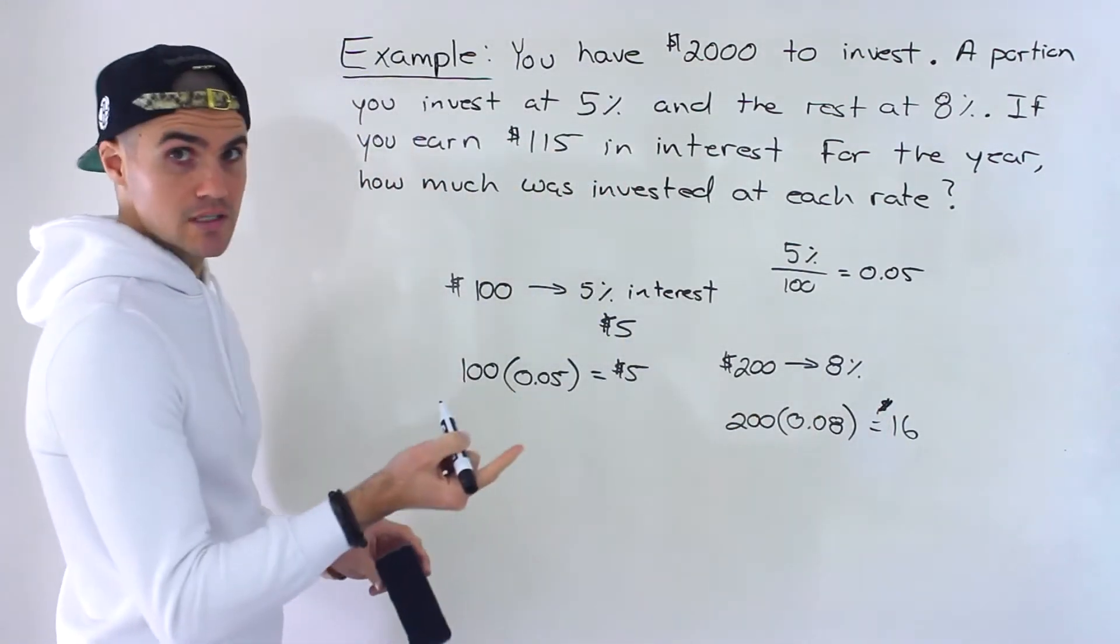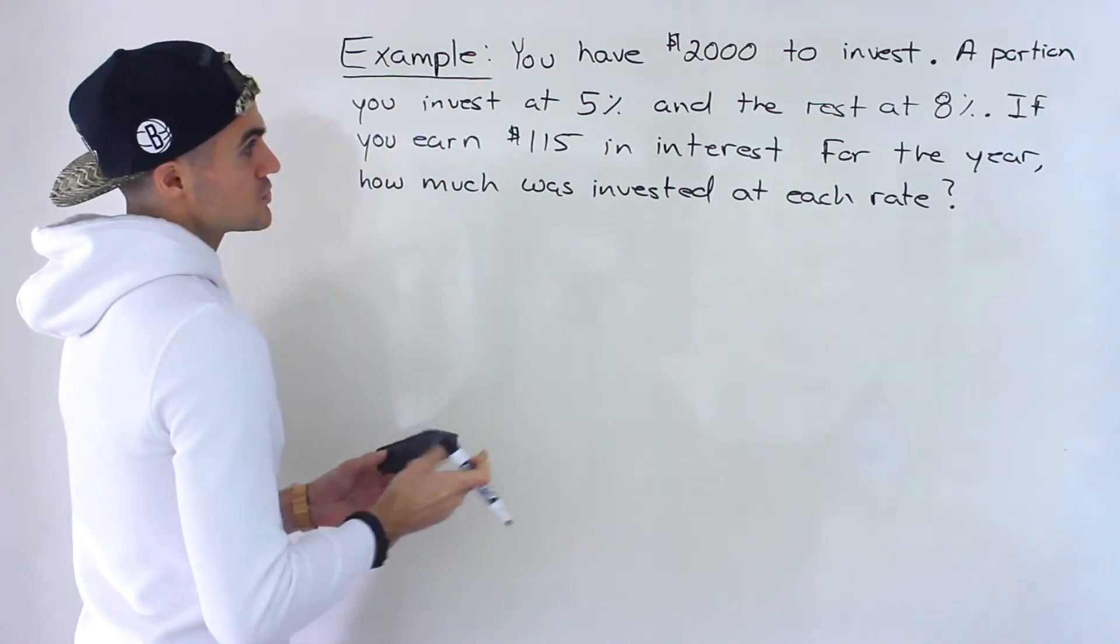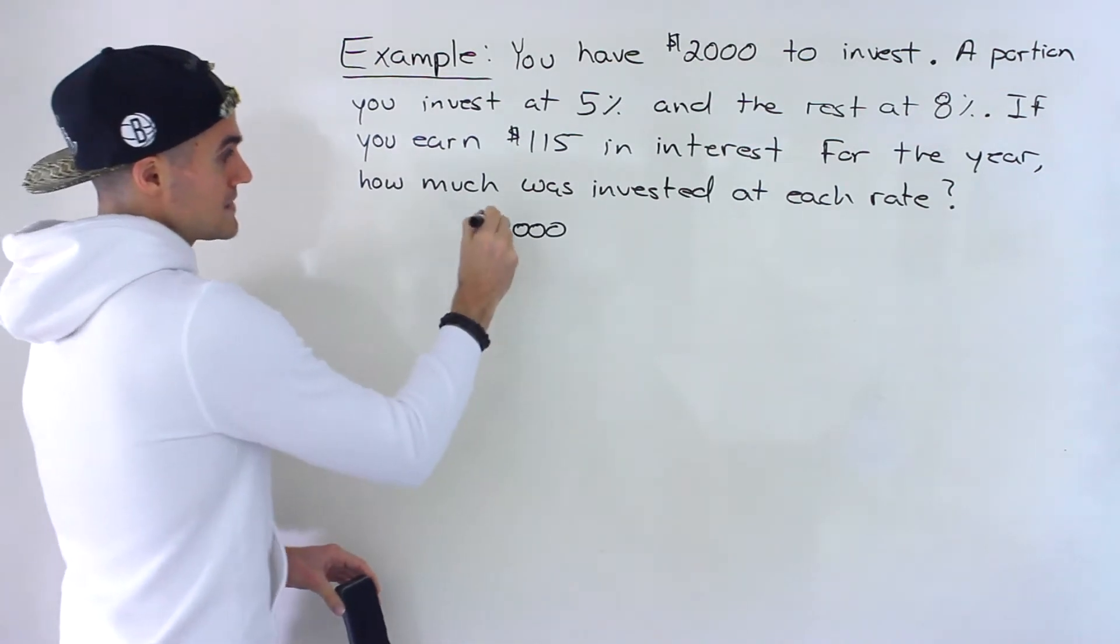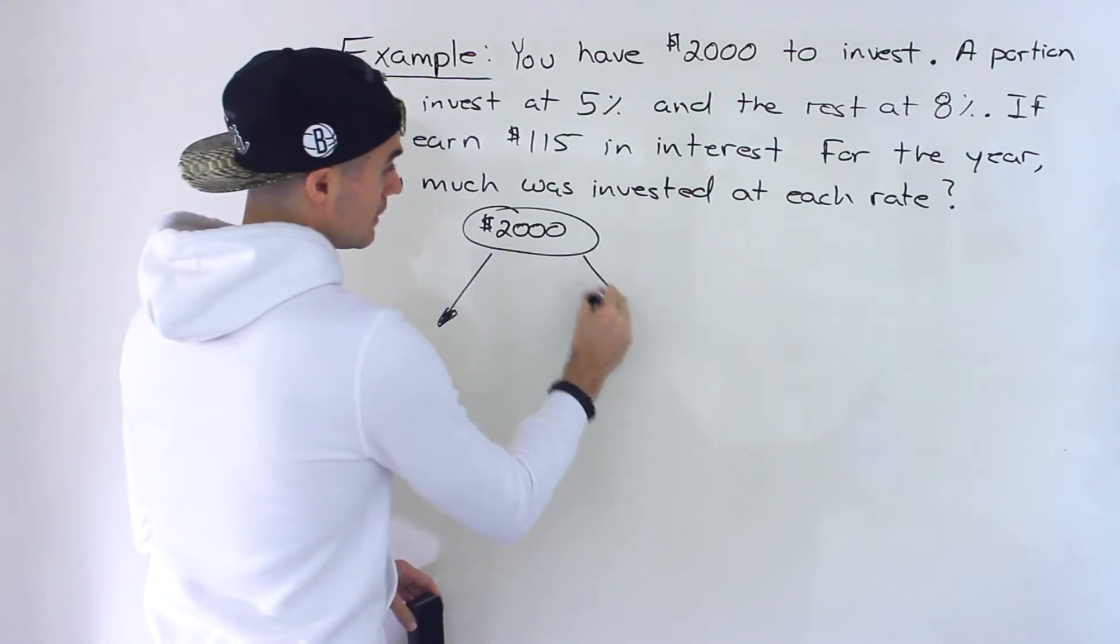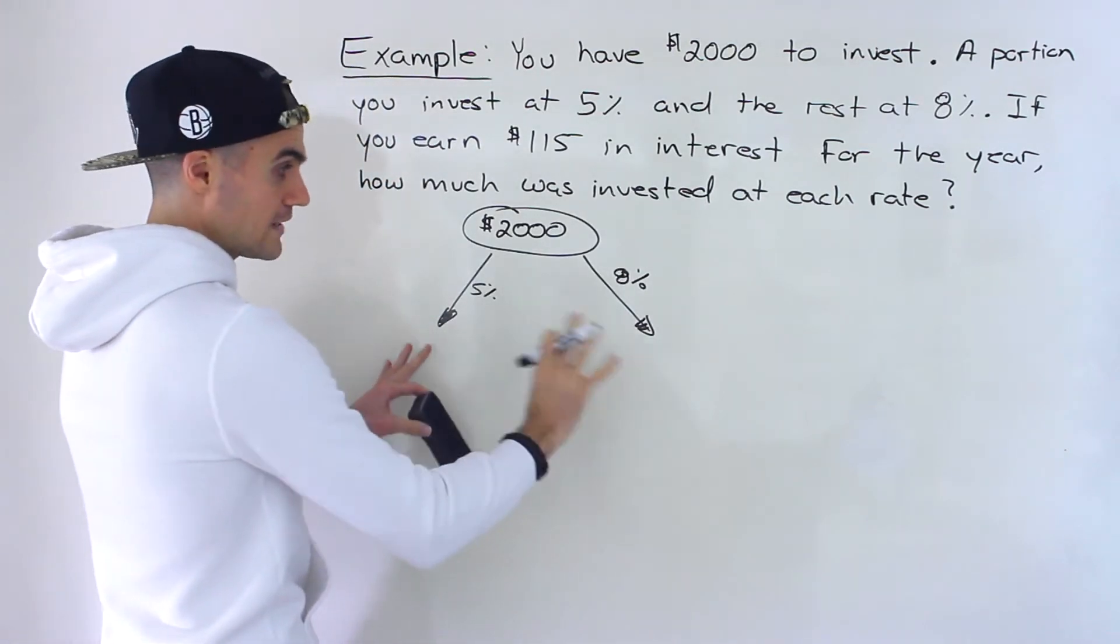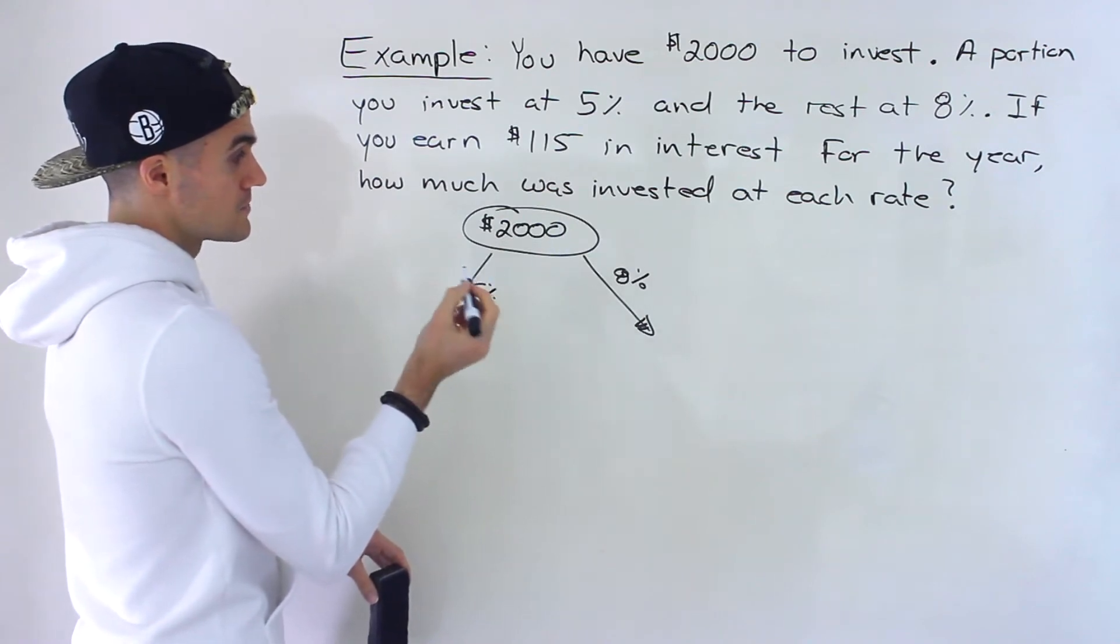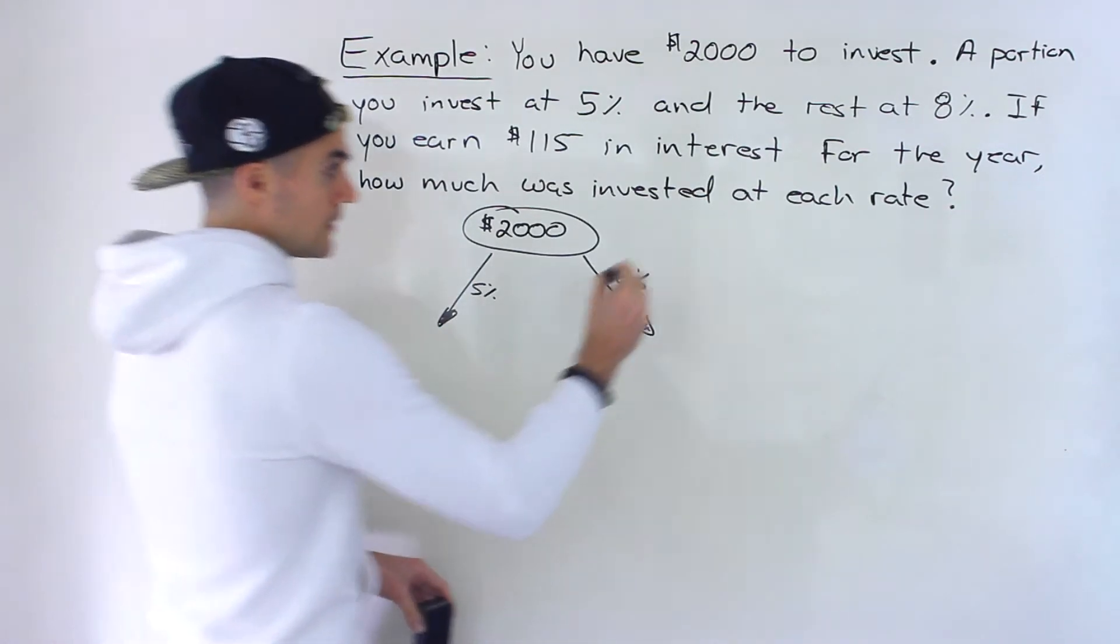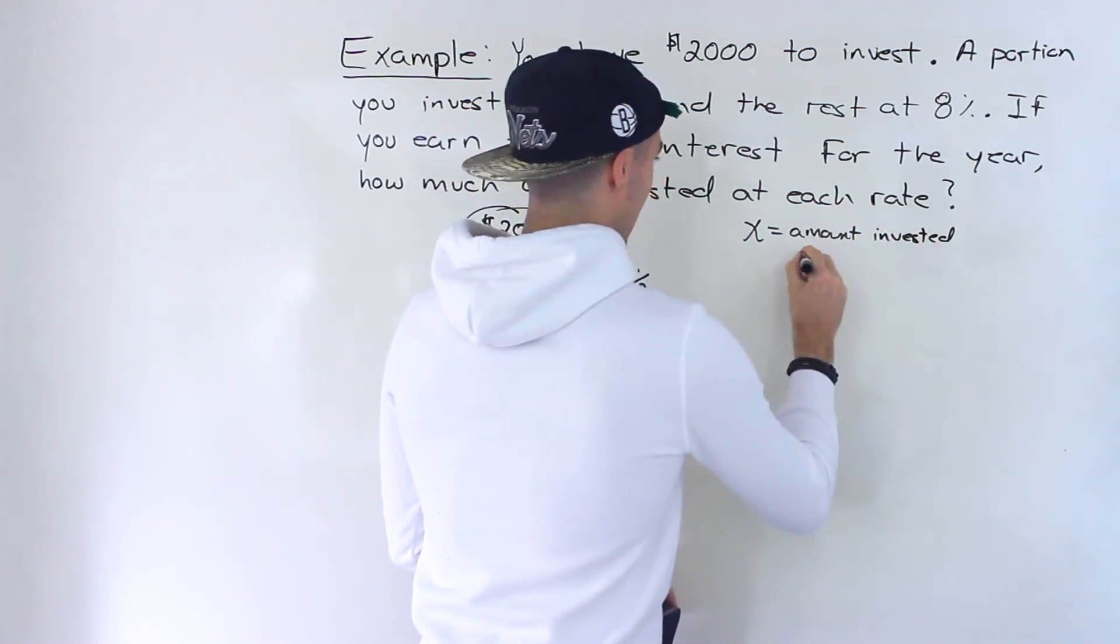So that's how we algebraically deal with these interest percentages. So knowing that, let's try to create some kind of equation where we could solve for this. So notice that we have $2,000 in total that we're going to invest. And what's happening is we're taking this total amount and then a portion of it, we're going to invest at 5%. And then the other portion, we're going to invest at 8%. And then we're told that the total interest that we get is going to be $115. So we have to solve for these amounts over here. And so what we can do is we can bring in a variable. So I'm going to let X equal the amount invested at 5%.